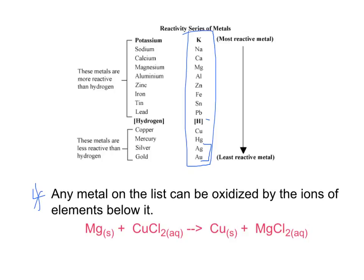Any metal on the list can be oxidized by the ions of elements below it. Let's take magnesium, for example. Magnesium is here, and copper is down here. Magnesium, since it's more reactive than copper, magnesium can come down and split up any union that copper has. Right now, copper has a union between the copper and chloride here. Magnesium is more reactive, so it can come in here and kick out the copper, taking the place of the copper in solution, creating solid copper.